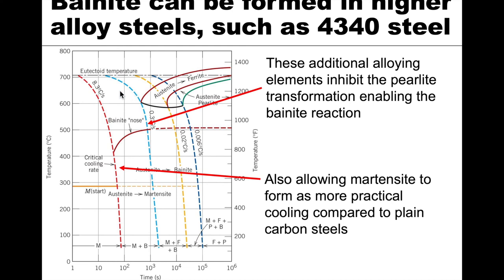There are many different microstructures possible depending on the cooling rate, and that's what this diagram communicates. The key point is that higher alloying elements are used to obtain martensite and bainite by slowing down the pearlite reaction — that's the role those additional alloying elements play, and it's why they're used to produce martensitic steel.